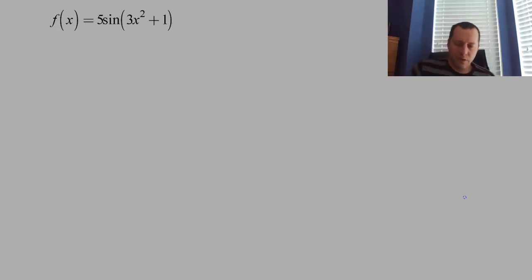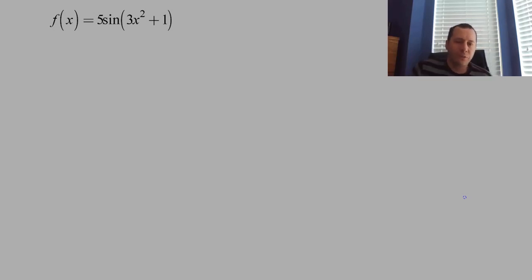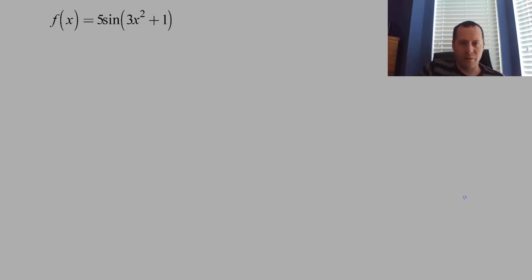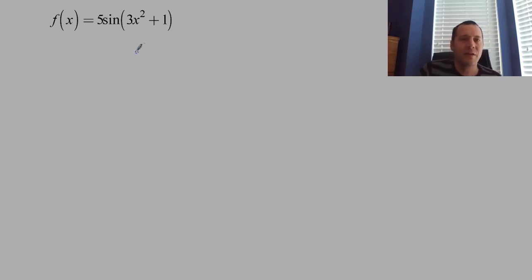We're learning a technique for undoing a chain rule—a chain rule that would happen when you differentiate. A good first thing to do is look at a derivative where there would be a chain rule, so we can see what we're undoing before we undo it. Take a look at f(x) here: f(x) equals 5 sine of 3x squared plus 1.